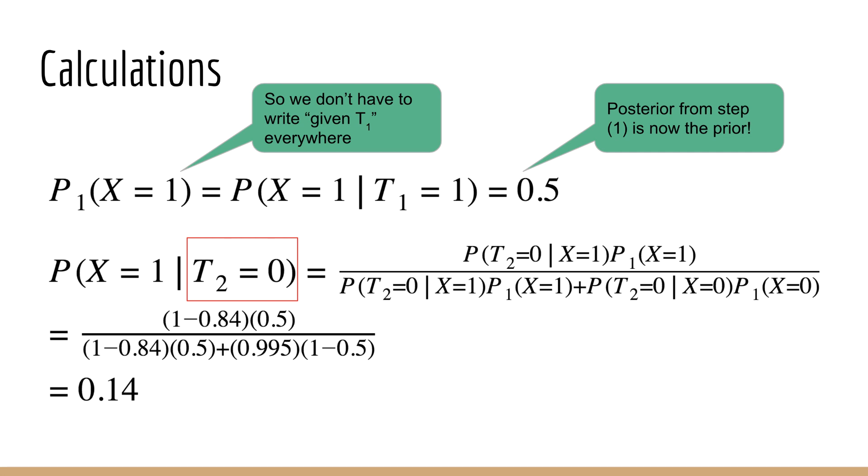So on the numerator, we have P of T equals 0 given x equals 1. That is, the probability of a false negative. Since the probability of a true positive is 84%, this value is 1 minus 84%. As an exercise, I'll let you figure out the rest of the probabilities. You should confirm that the result of this calculation is 14%. Therefore, after two tests, one of which was positive and one of which was negative, the probability that you have the virus is now only 14%.